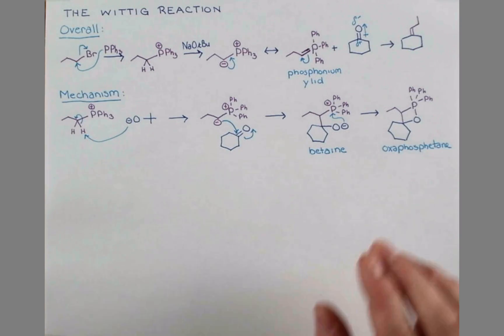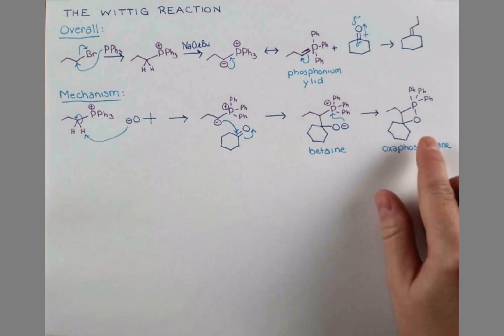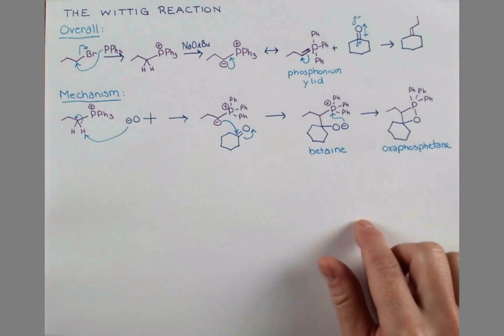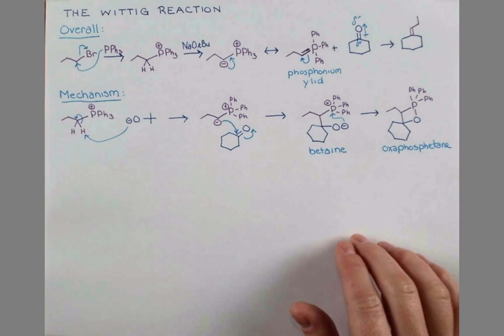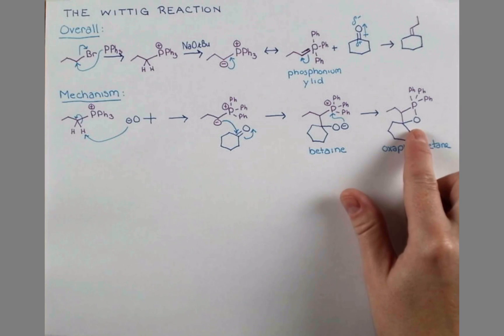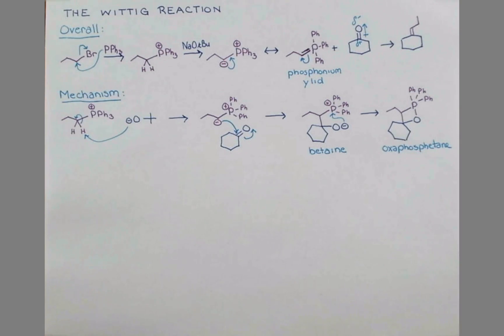The next step is going to give our alkene directly. And so we can draw two arrows within this ring, breaking the ring to form our alkene and the product that I haven't drawn up here, which is going to be triphenylphosphine oxide. So we can show our arrow pushing like this and arrive at our final products of the reaction.